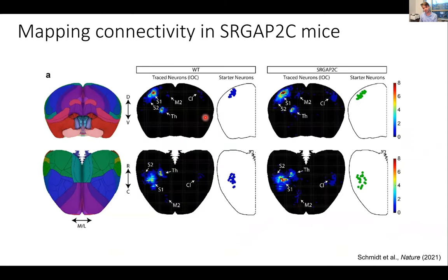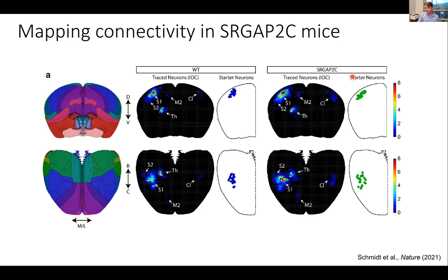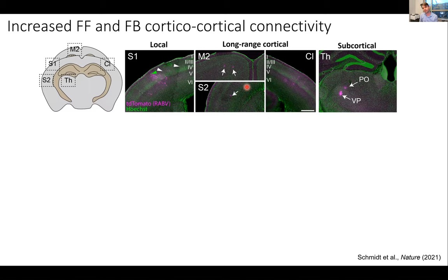The first important observation is that in both wild-type and SRGAP2C mice, the traced neurons come from basically the same brain regions — a neuron expressing SRGAP2C doesn't suddenly receive connectivity from regions it normally doesn't. But there are quantifiable differences. About 95% of all presynaptic neurons connecting to a layer 2/3 cortical neuron in somatosensory cortex come from local connectivity within S1 itself, plus long-range projections from M2, S2, and the contralateral cortex, with a major subcortical input from the thalamus — mostly the posterior and ventral posterior nuclei.